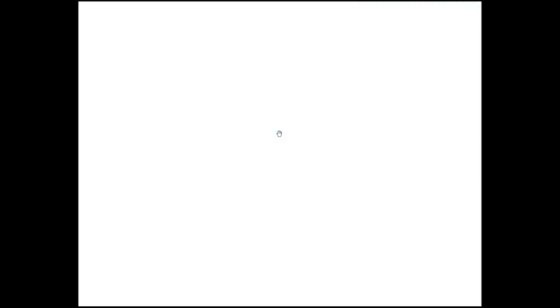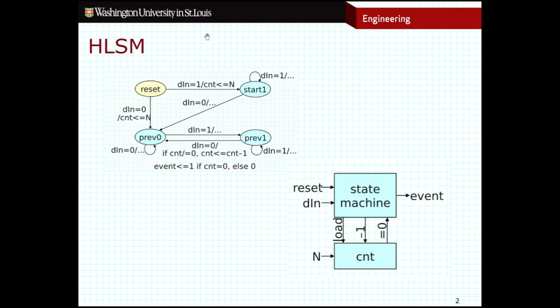We're going to keep working with this example that we've been working with in most of the videos recently, this pulse counter machine. If you remember, this is the high-level diagram that we took a look at. It consists of two major pieces, the state machine as well as the data path that's represented by this register down here.